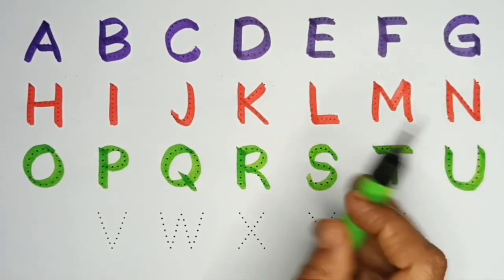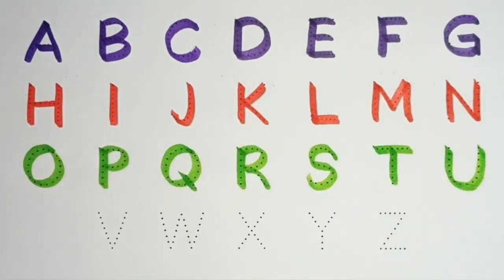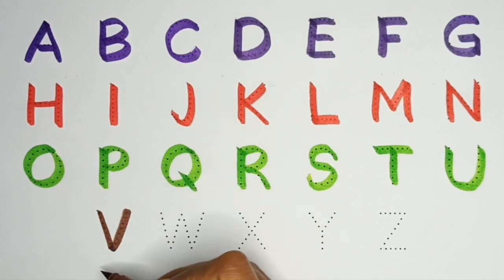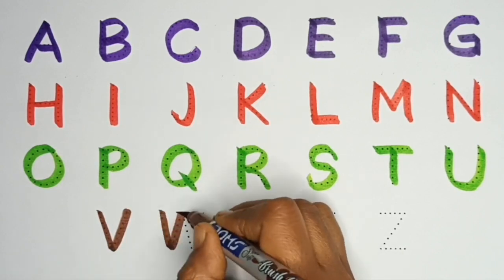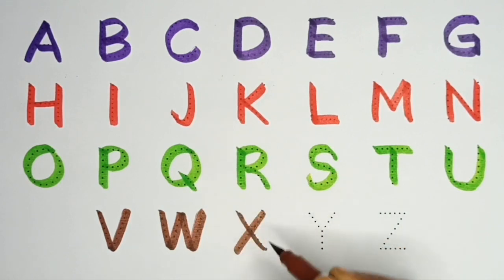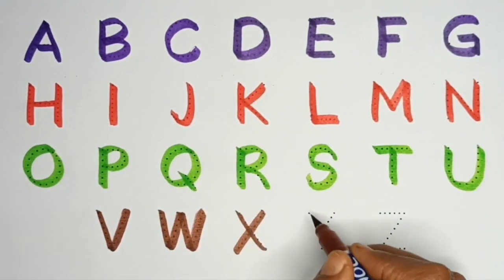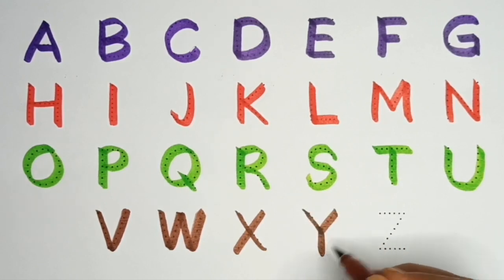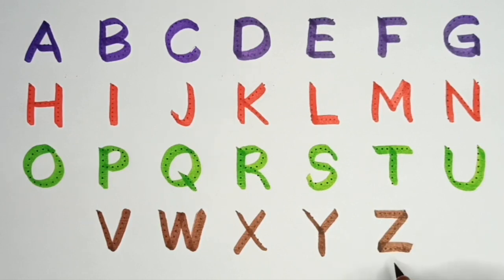Parrot green colors. V for van. W for watch. X for xylophone. Y for yak. Z for zebra. Brown colors.